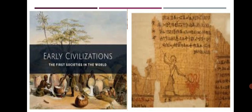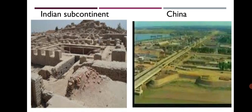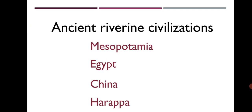In this chapter, we are going to focus on these four regions where the ancient river valley civilizations originated. They are Mesopotamia, Egypt, the Indian subcontinent and China. The civilization in these four regions developed in the river valleys; hence they are known as riverine civilizations. The four ancient riverine civilizations are Mesopotamia, Egypt, China and Harappa. Let us learn in detail about each one of them.